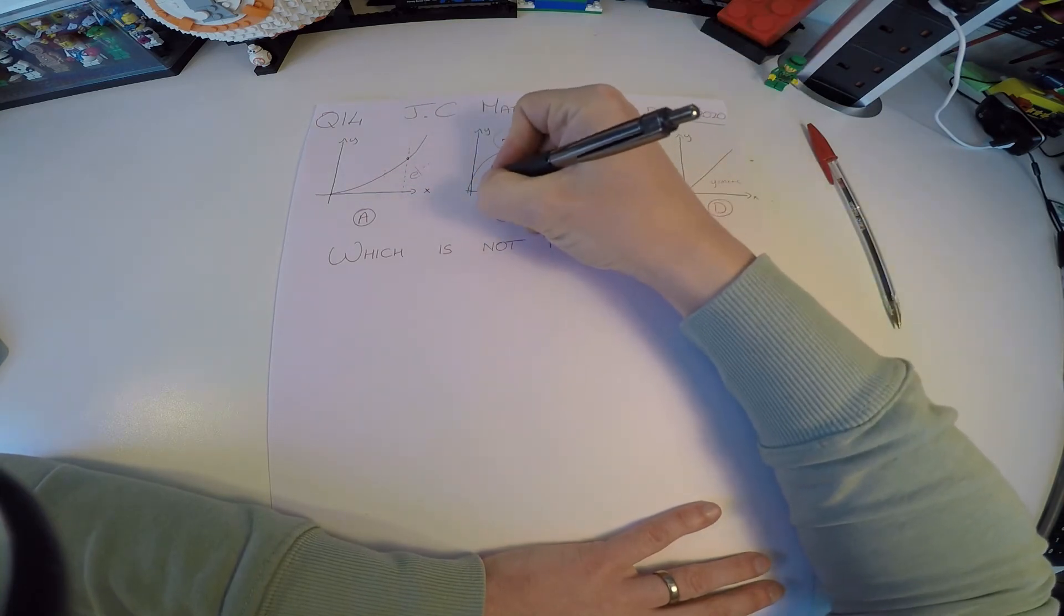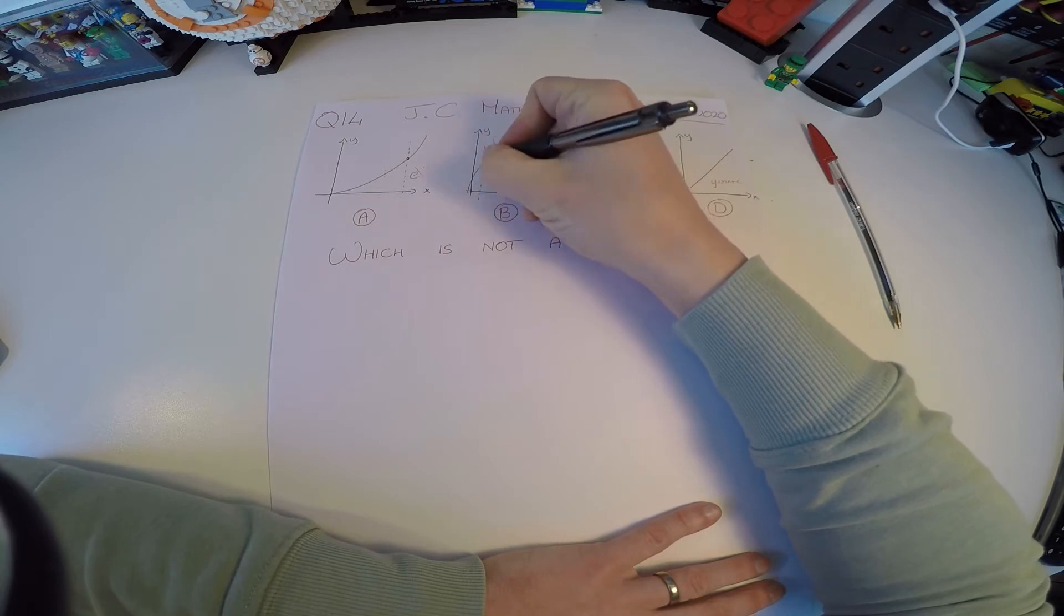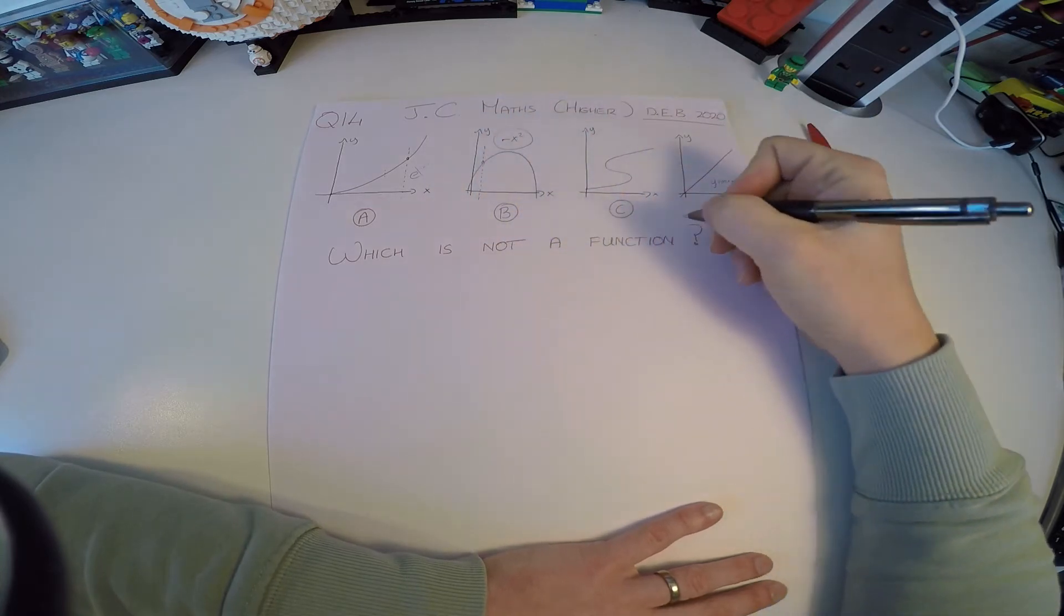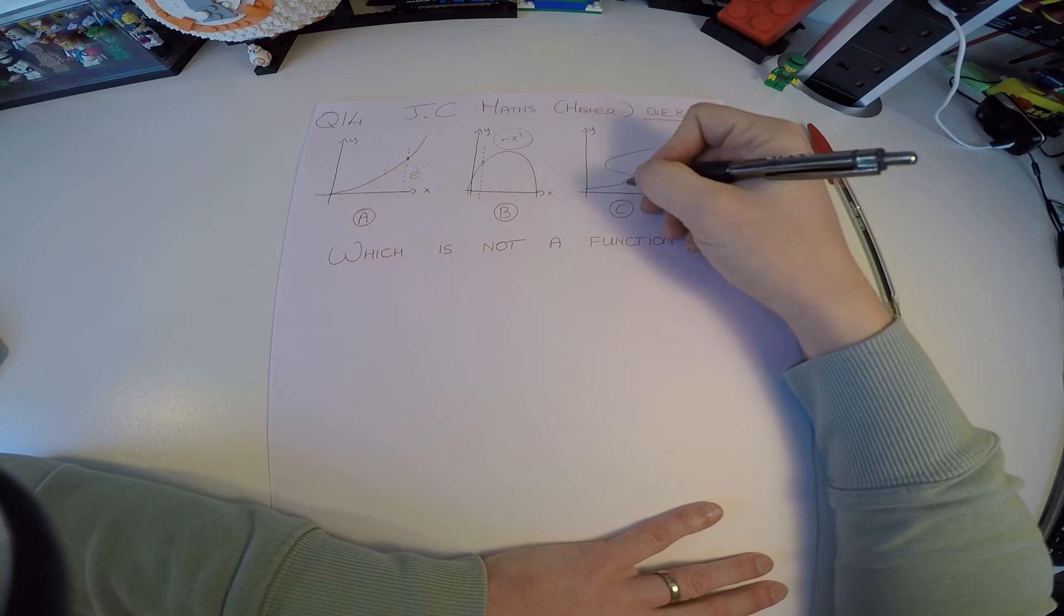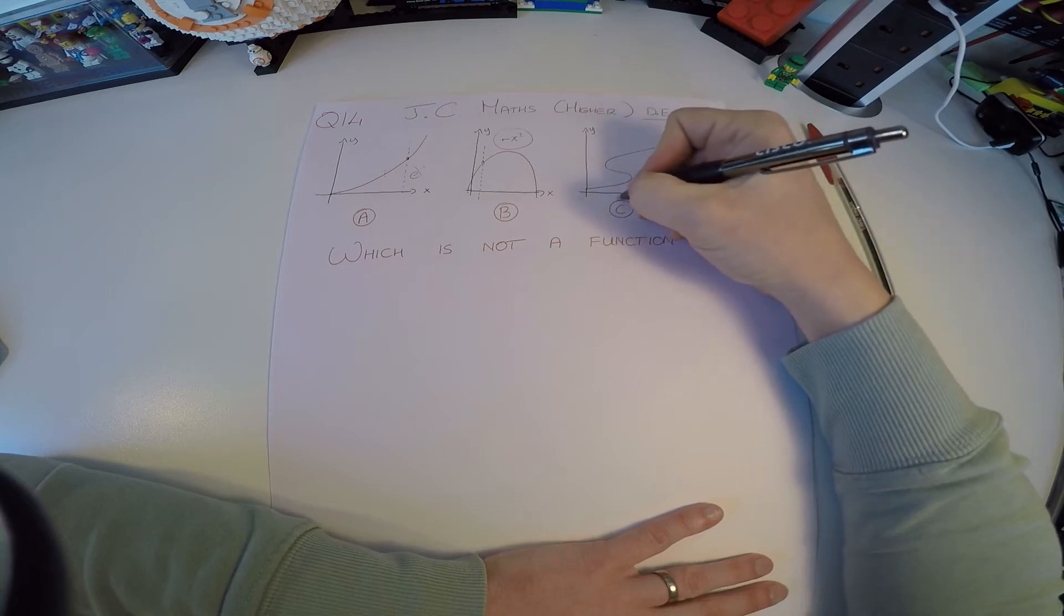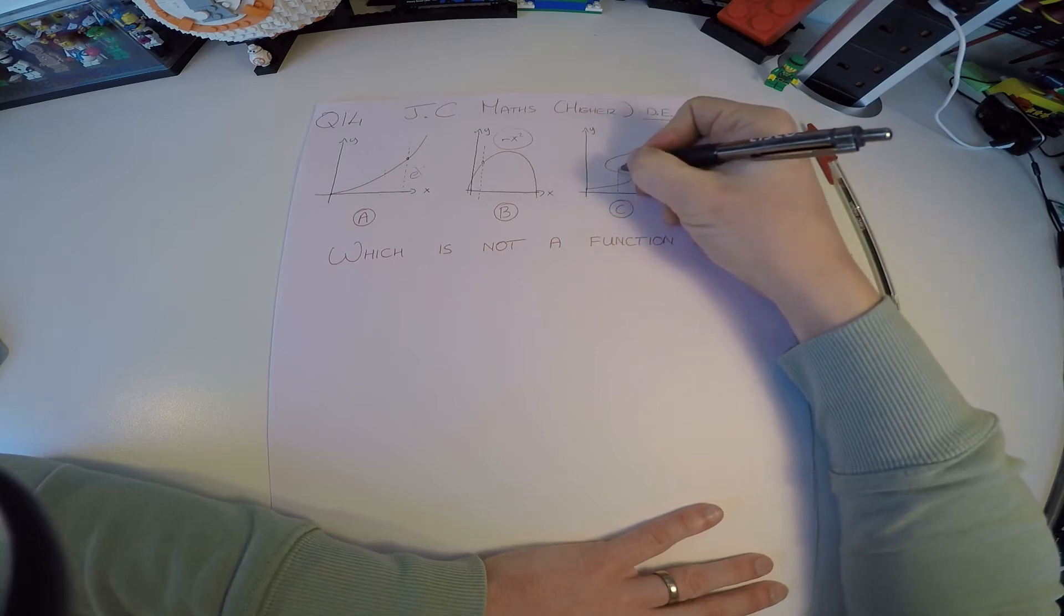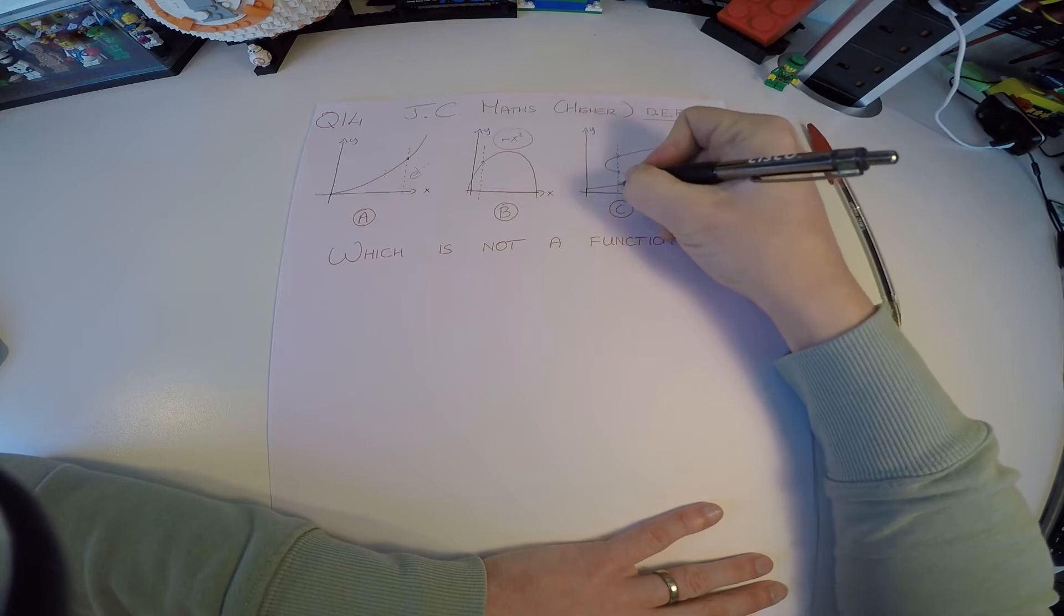What do I draw vertical lines here? I can also only go through the function once. This one, however, is different. I can actually pick a vertical line that goes through the function and actually cuts it three times.